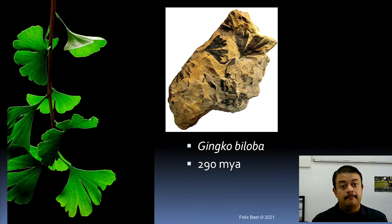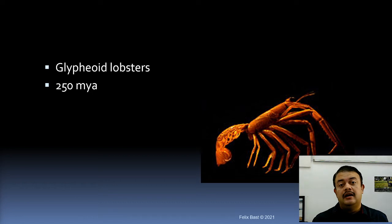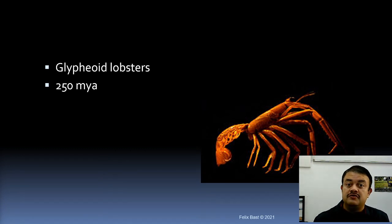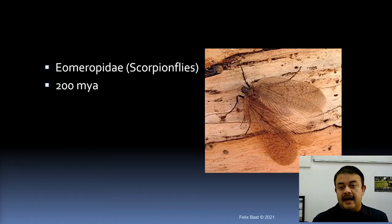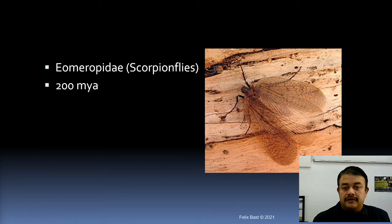Glyphoid lobsters are another living fossil, with their lineage originating 250 million years ago. We also have scorpion flies — family Meropidae — which are a very ancient lineage dating back around 200 million years. These are also considered living fossils.